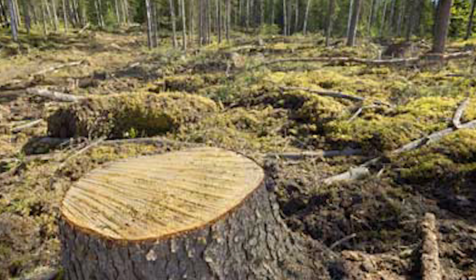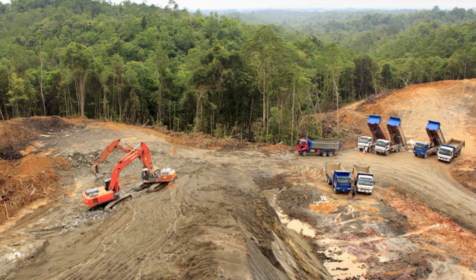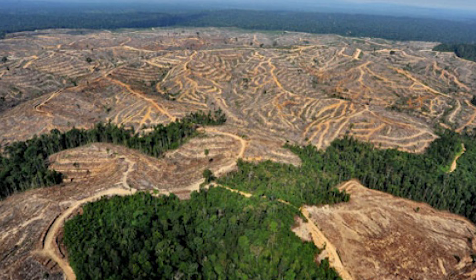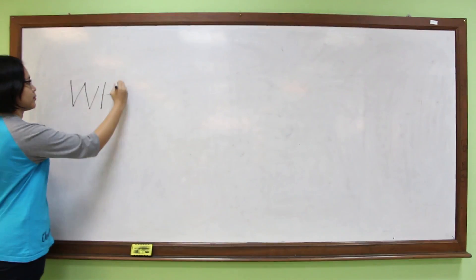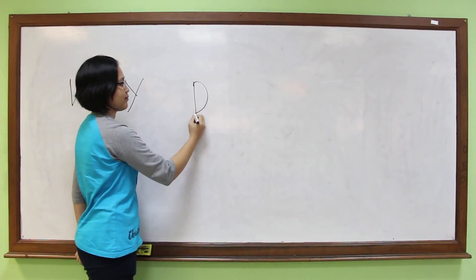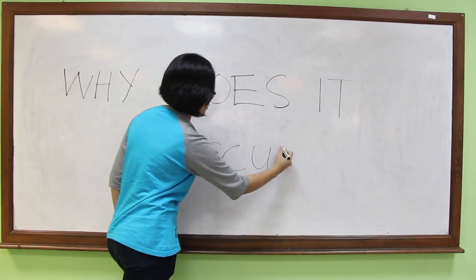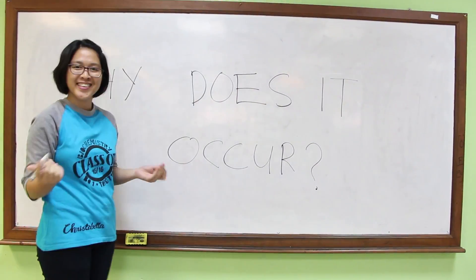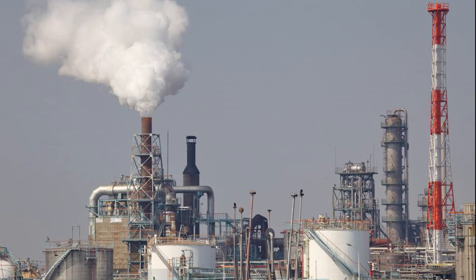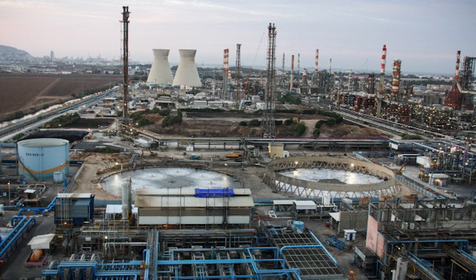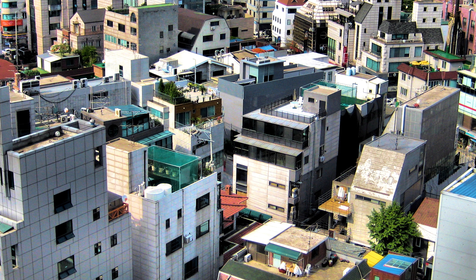Deforestation is the practice of cutting down trees for different reasons. It is fundamentally cutting down trees and leaving behind a vast open wasteland. The main reasons for deforestation can be classed into three different categories. Basically, industry uses clearing of the forest to build factories or residential areas.